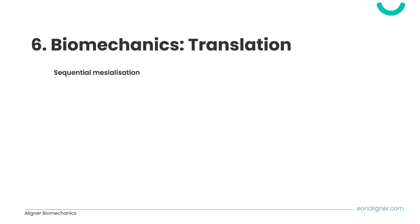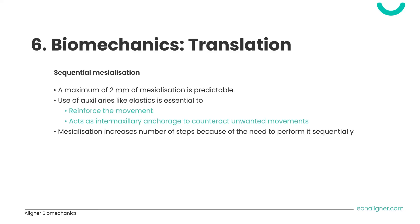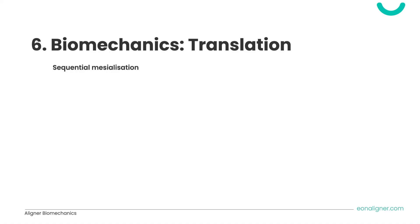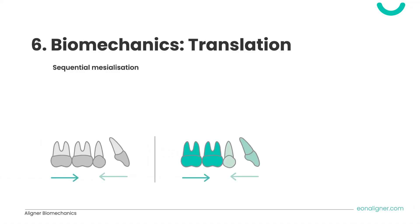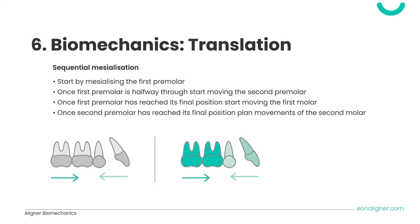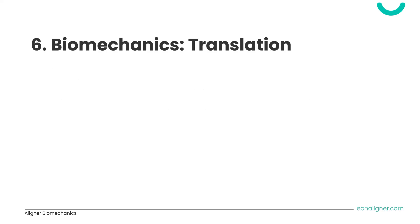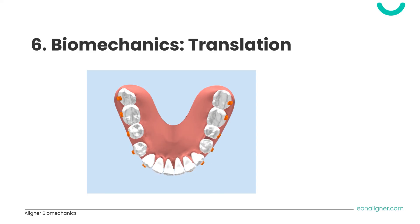The second sequential movement is sequential mesialization. A maximum of 2 mm of mesialization is predictable. Use of auxiliaries like elastics is essential to reinforce movement and provide intermaxillary anchorage to counteract unwanted movements. Mesialization increases the number of steps due to sequential performance. The sequence is as follows: start by mesializing the first premolar; once halfway through, start moving the second premolar; once the first premolar reaches its final position, start moving the first molar; once the second premolar reaches its final position, plan movements of the second molar.